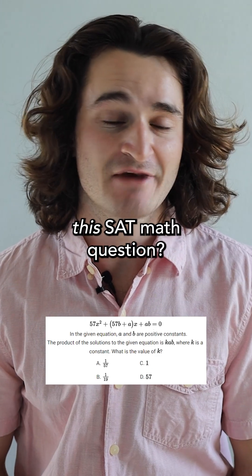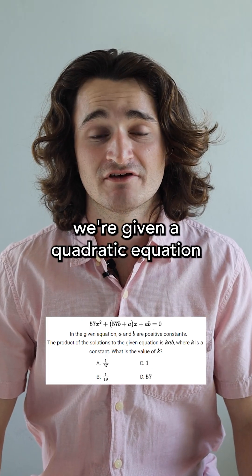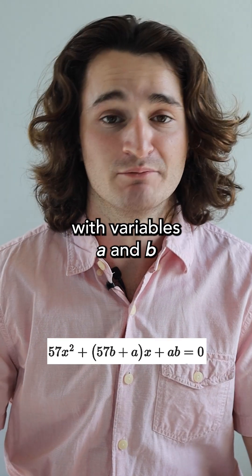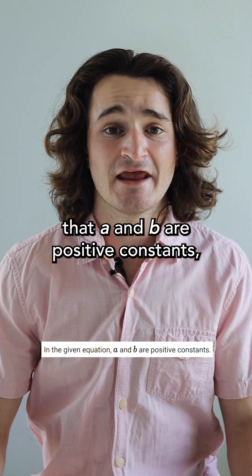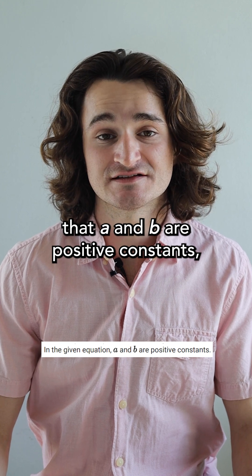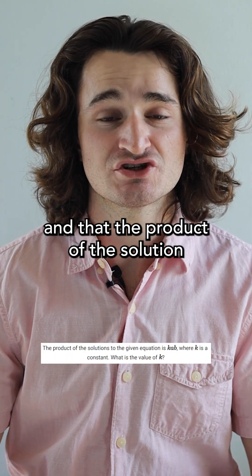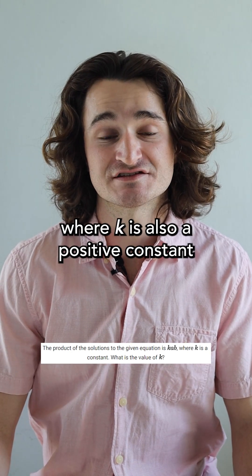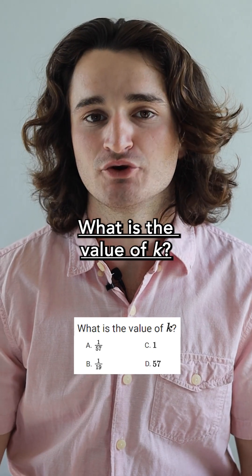Do you know the trick to this SAT math question? In this question we're given a quadratic equation with variables a and b. The question states that a and b are positive constants and that the product of the solution to this quadratic equation is kab where k is also a positive constant. What is the value of k?